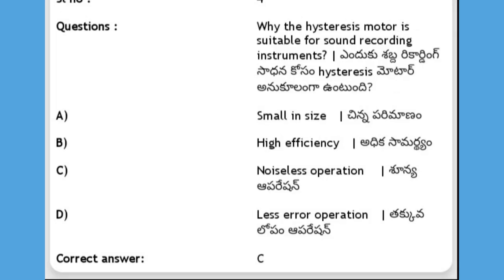Why is the reluctance motor suitable for sound recording instruments? Options: small in size, high efficiency, noiseless operation, less error operation. The answer is C, noiseless operation.